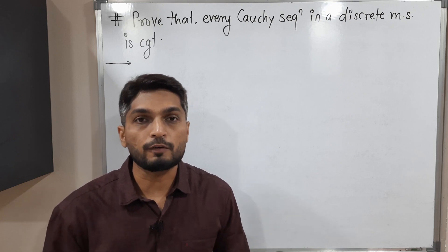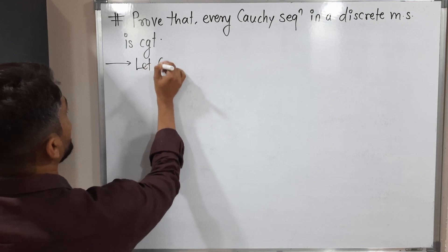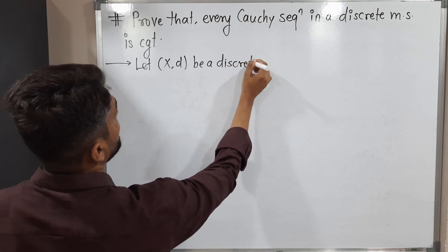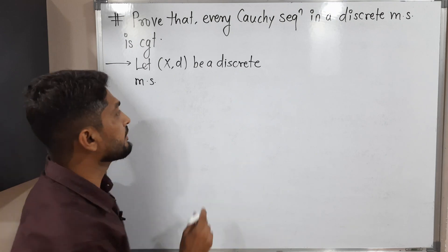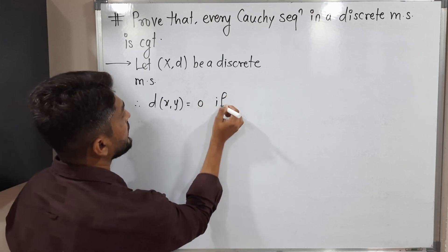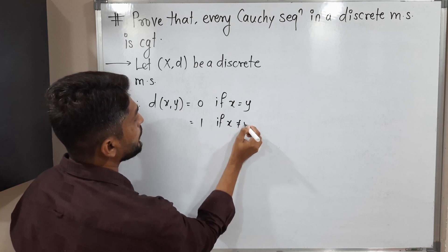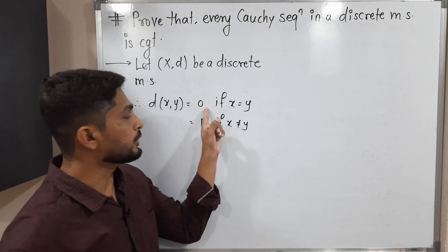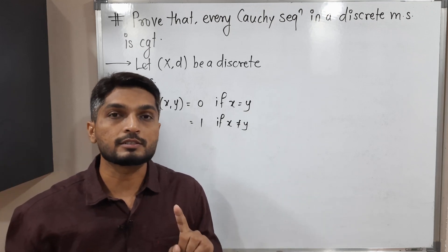So let us start with a definition of discrete metric space. So I am going to consider a discrete metric space. Let (X, D) be a discrete metric space. It is defined as: D(x, y) is equal to 0 if x is equal to y, and it is equal to 1 if x is not equal to y. That means in a discrete metric space there are only two distances, 0 and 1. If both points are the same, the distance is 0, and if the points are distinct, the distance is 1.